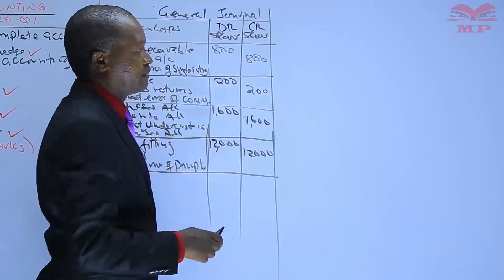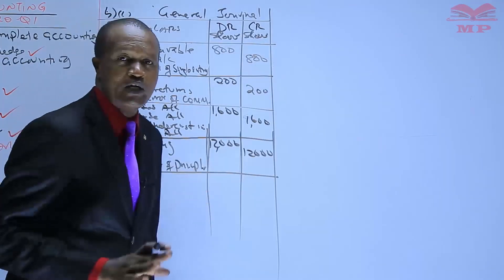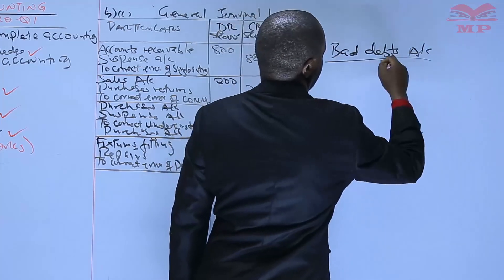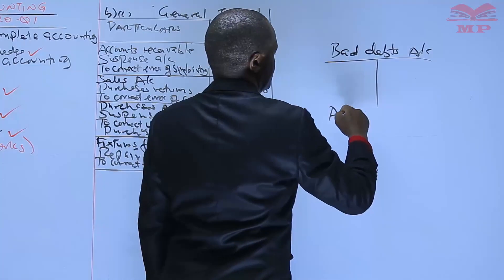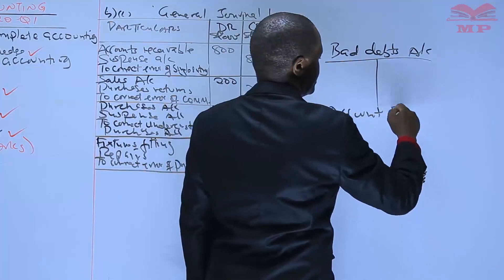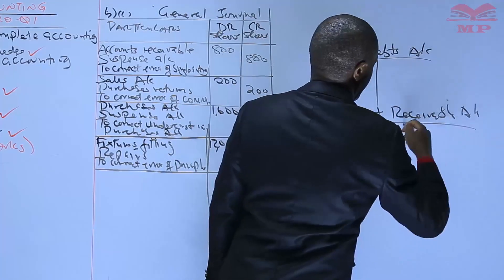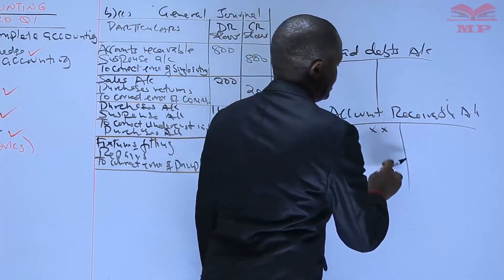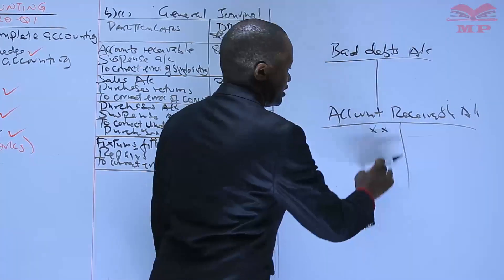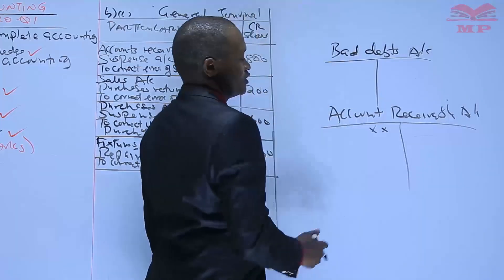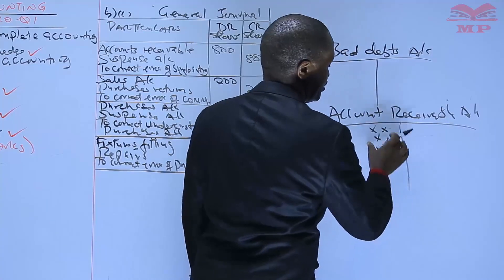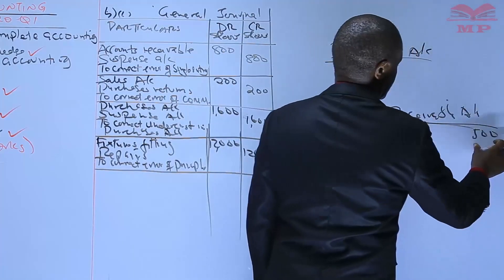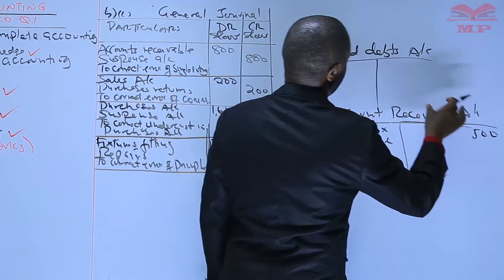Having identified the type of error, how do we correct it? When writing off bad debts, two accounts are affected: bad debts, which is an expense, and accounts receivable — the debtors account. When selling goods on credit, accounts receivable is debited. To write off and reduce it, you credit accounts receivable. The amount here is five hundred thousand, so accounts receivable is credited and bad debts is debited.